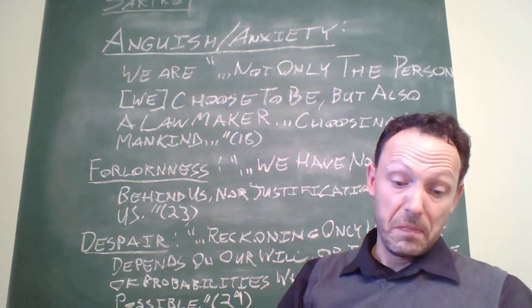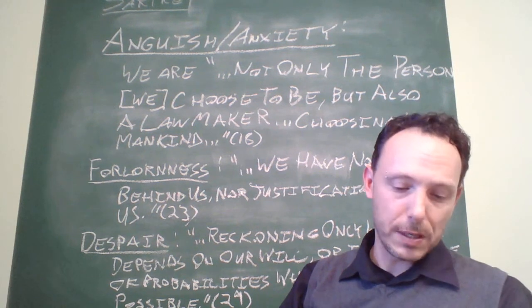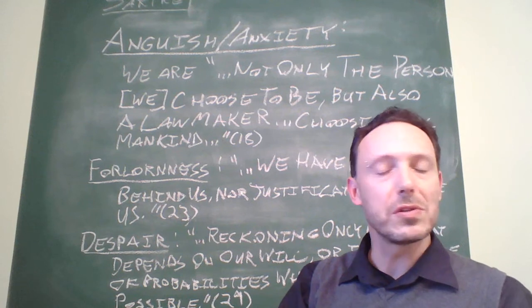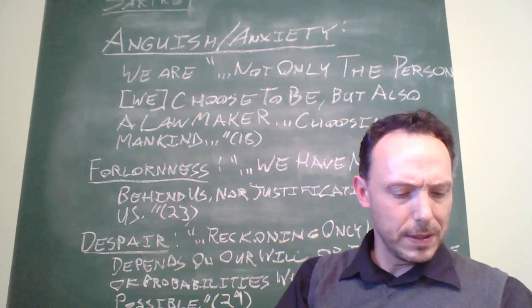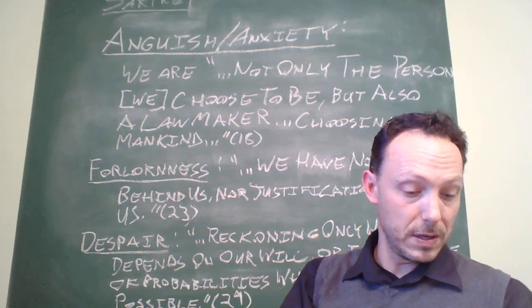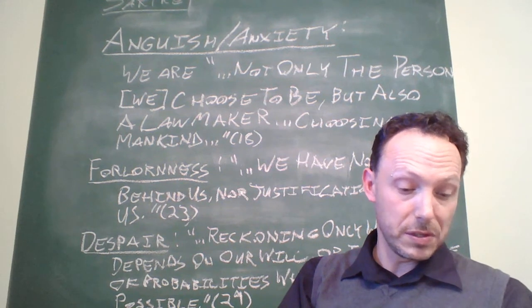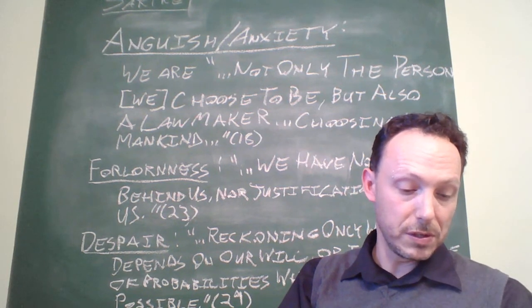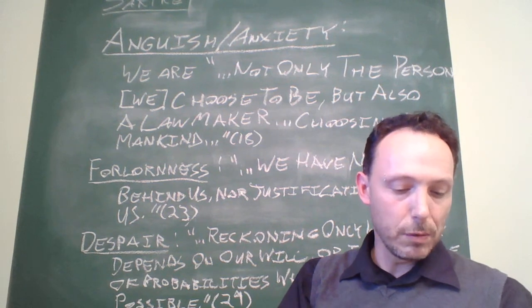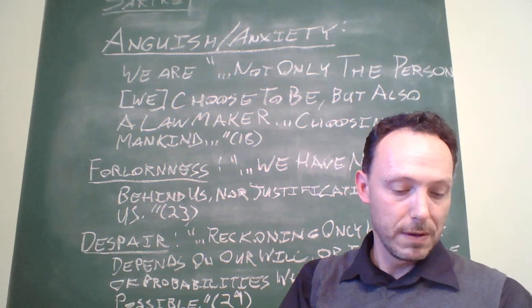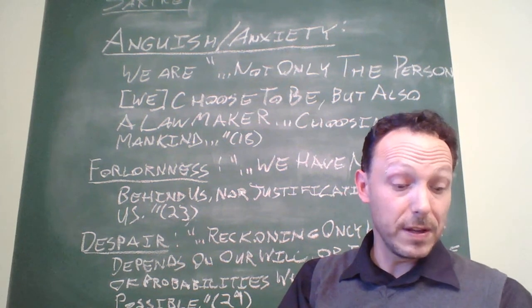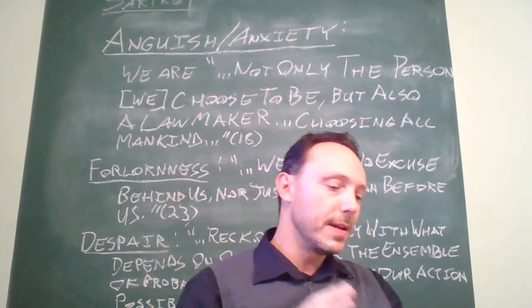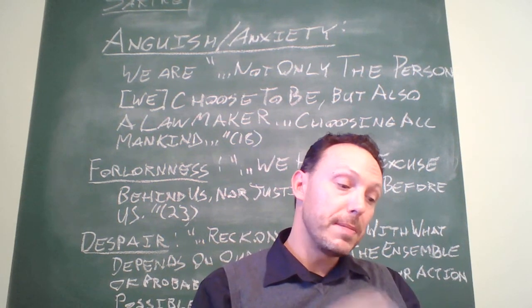Sartre continues. The existentialist is strongly opposed to certain kind of secular ethics that would like to abolish God with the least possible expense. Then he gives an example of these French theorists in 1880 who tried to do this. Well, you can't really do that. So, over on page 22, he continues, quoting Dostoyevsky: If God didn't exist, everything would be possible, everything would be permitted. Indeed, Sartre claims, everything is permissible if God does not exist and as a result, man is forlorn because neither within him nor without does he find anything to cling to. He can't start making excuses for himself if existence really does precede essence. There's no explaining things away by reference to a fixed idea or given human nature. In other words, there's no determinism.